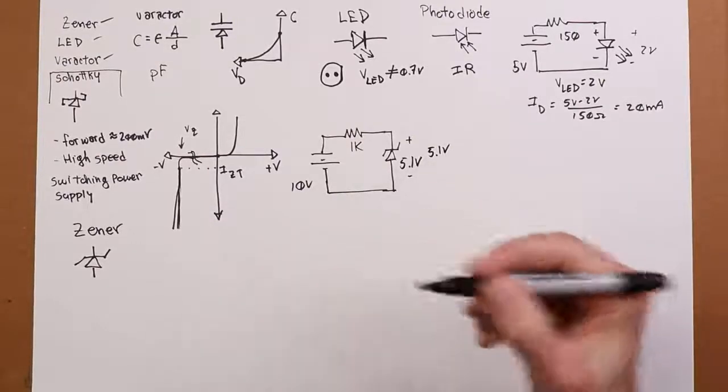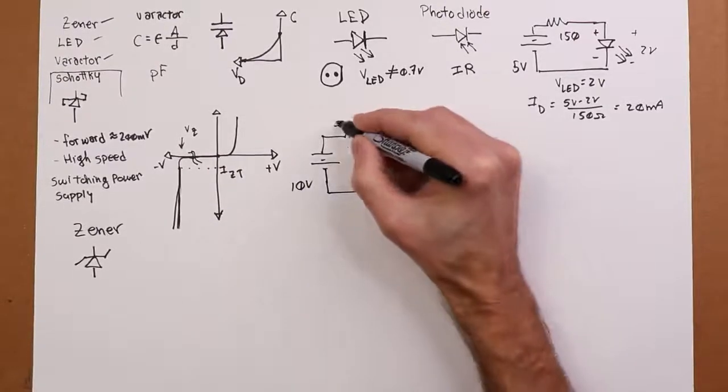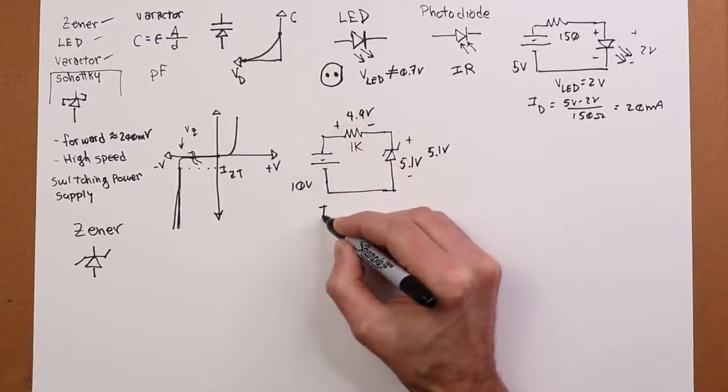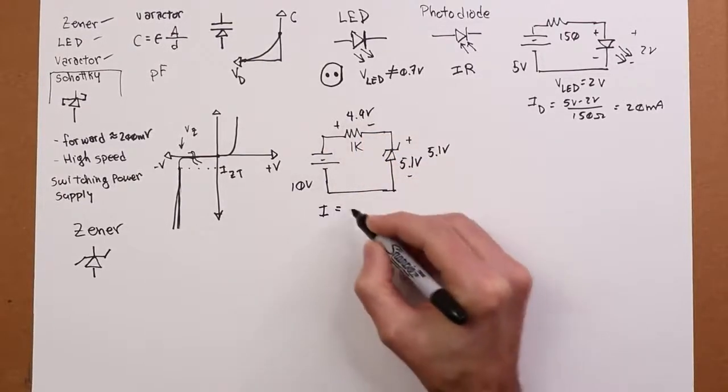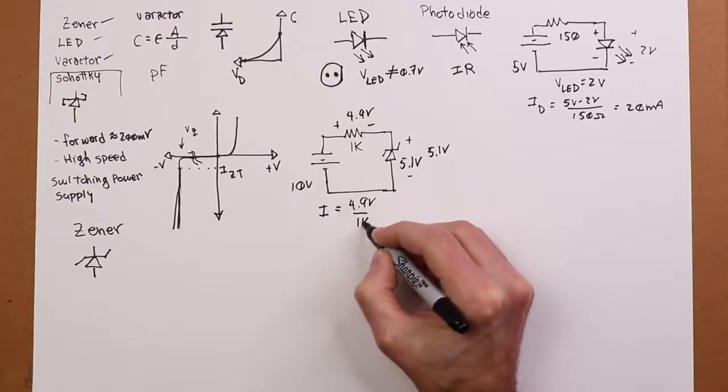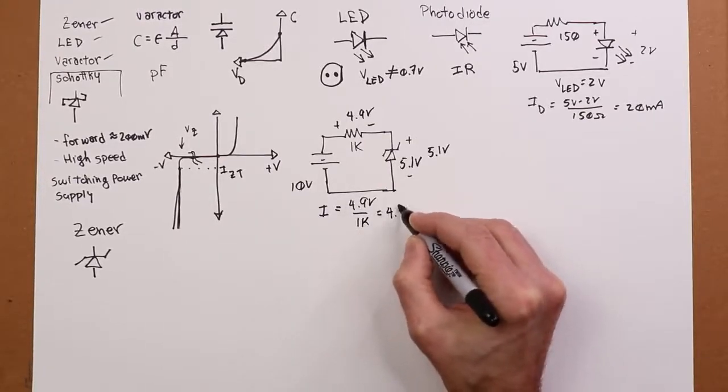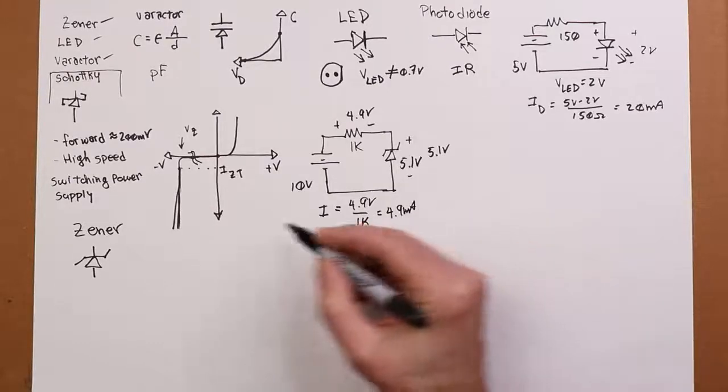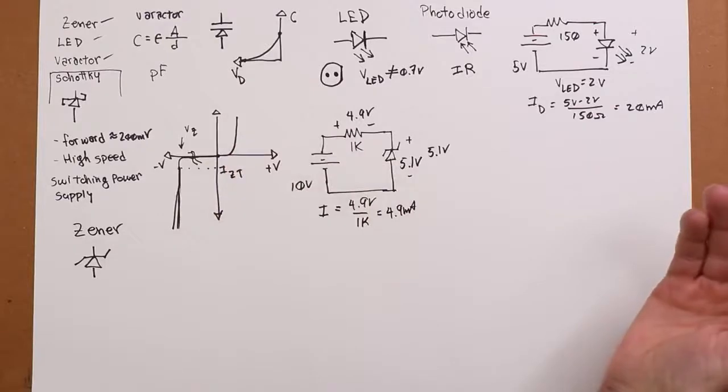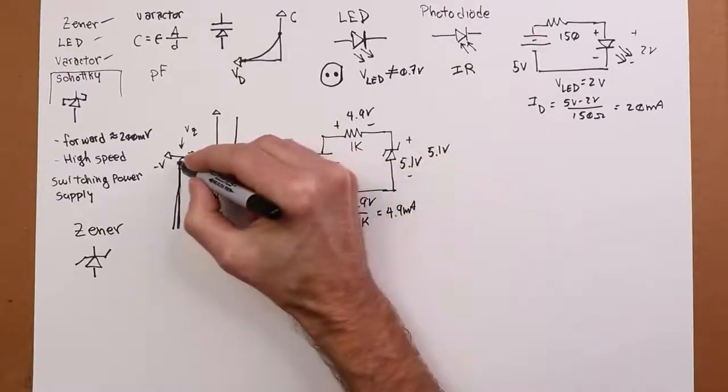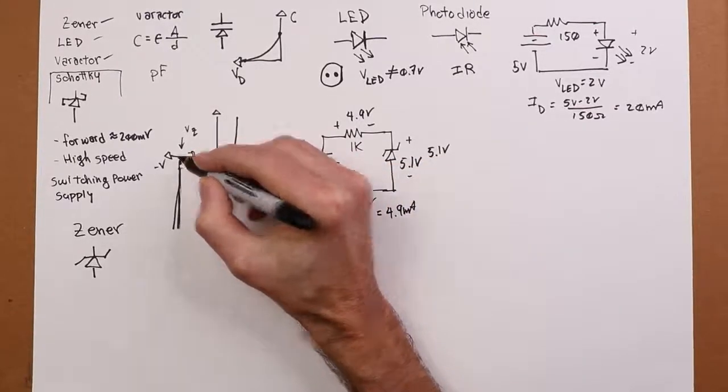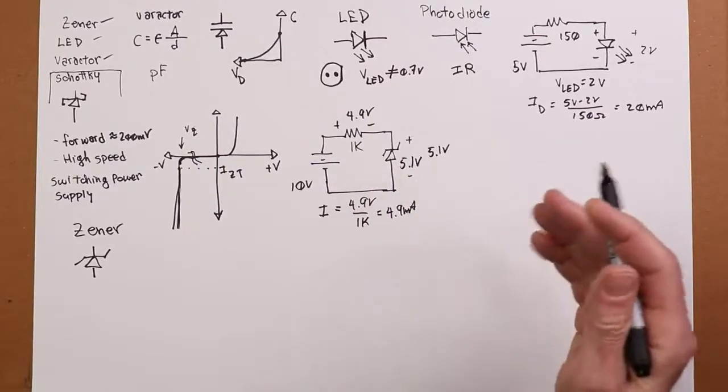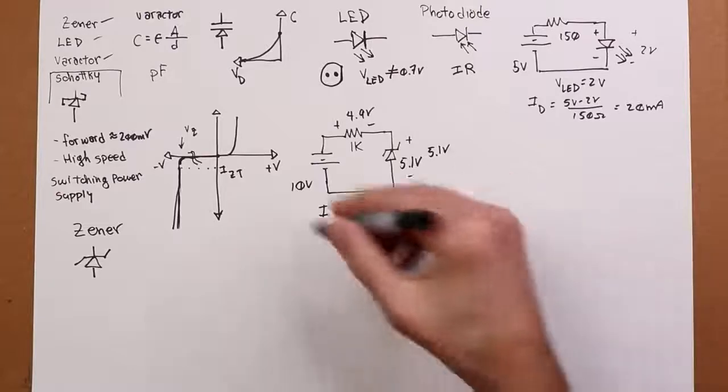So what we would see here is 5.1 volts, which means the rest of the voltage would have to be dropping across this guy, 4.9 volts. So your current would be 4.9 volts divided by 1k or 4.9 milliamps. Now, as long as that's above IZT, everything's great. If it's not, and you're back here on the curve, you're probably not going to get 5.1, maybe get 5, 4.93, whatever.